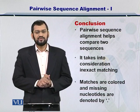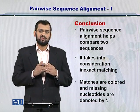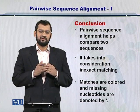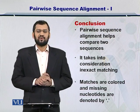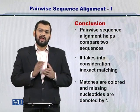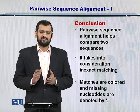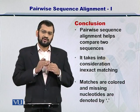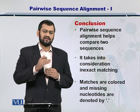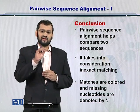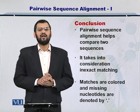In conclusion, pairwise sequence alignment allows you to compare two sequences against each other, and it is an inexact matching process. As you just saw in the second example, if some amino acids or nucleotides are not present in the other sequence, you represent them by placing a dot — and this is called a gap.